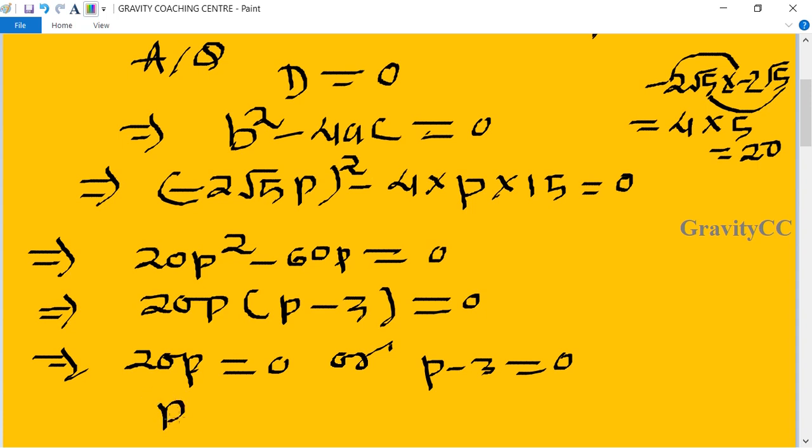So here p = 0 or p = 3. We can't take p = 0, so the required answer is p = 3.